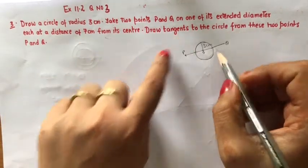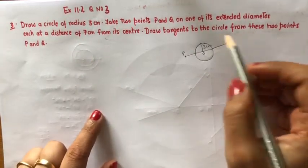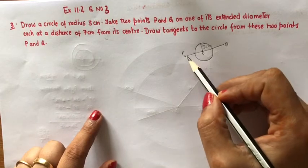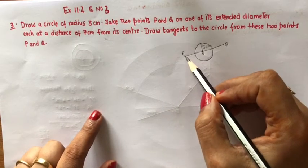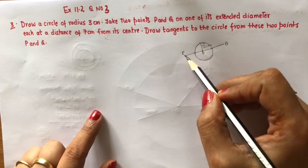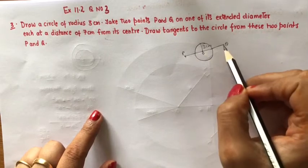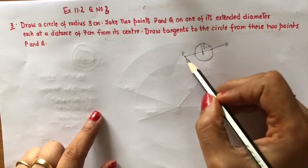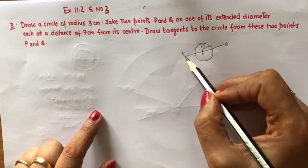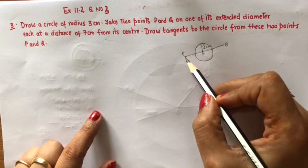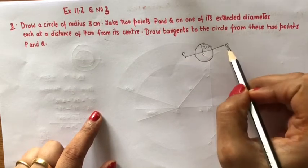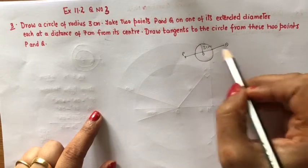And draw tangents to the circle from these 2 points. So previous question we were drawing the tangents from one single point. That is only the difference. Now we will be drawing tangents from 2 points. So process you know. So we are supposed to draw tangents from the points P and Q on this circle.